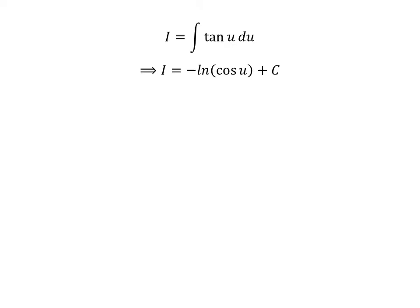i is equal to minus natural log of cosine of u plus capital C. Capital C is the arbitrary constant of indefinite integral. Never forget to add this constant.